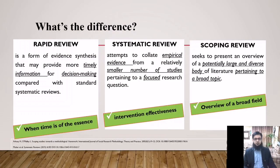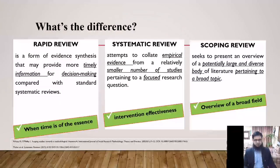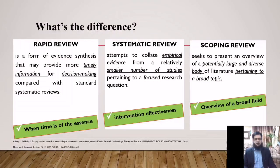When time is of the essence, go for a rapid review — a form of evidence synthesis that provides more timely information for decision making compared with standard systematic reviews. If your goal is to measure intervention effectiveness, work on a systematic review, which collects empirical evidence from a smaller number of studies pertaining to a particular focused research question. But if your target is to have an overview of a broader field, the scoping review is the solution, as it seeks to present an overview of a potentially large and diverse body of literature pertaining to a broader topic.